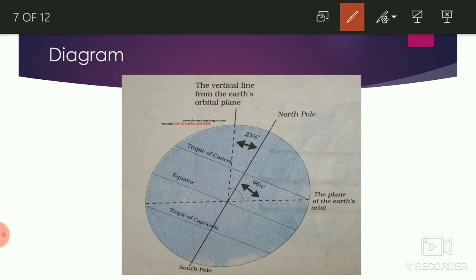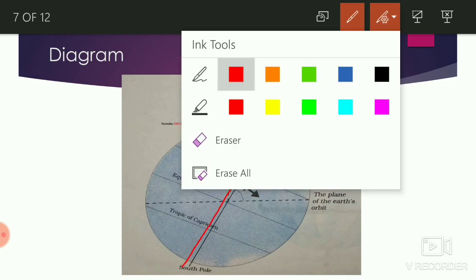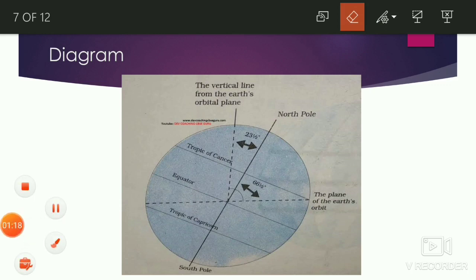In the diagram, the long vertical line is the axis. The axis is tilted at an angle of 23.5 degrees to the vertical. The extreme points of the axis are the north pole and the south pole.